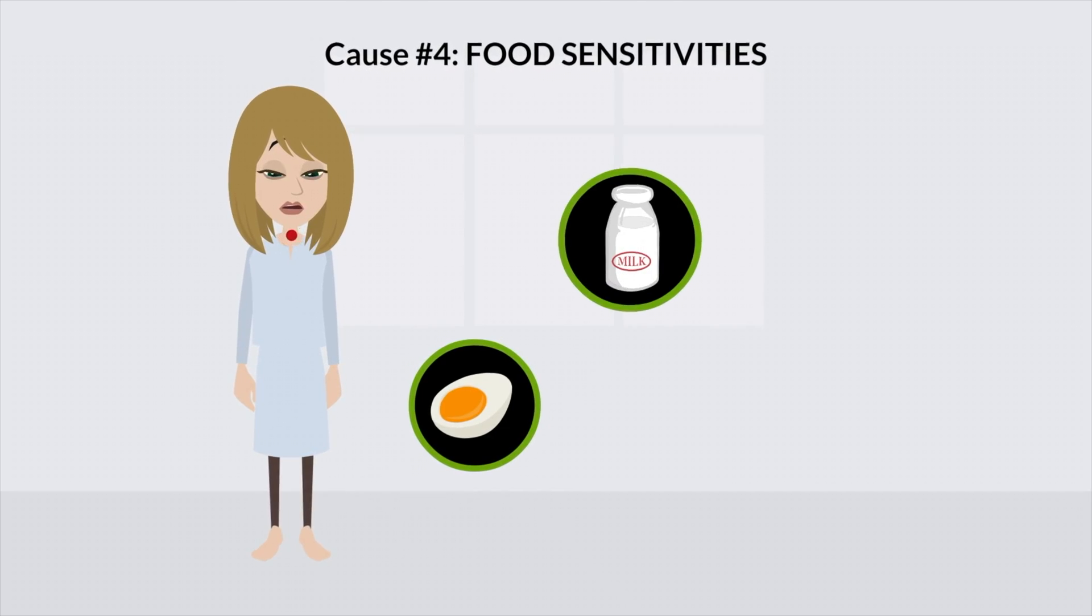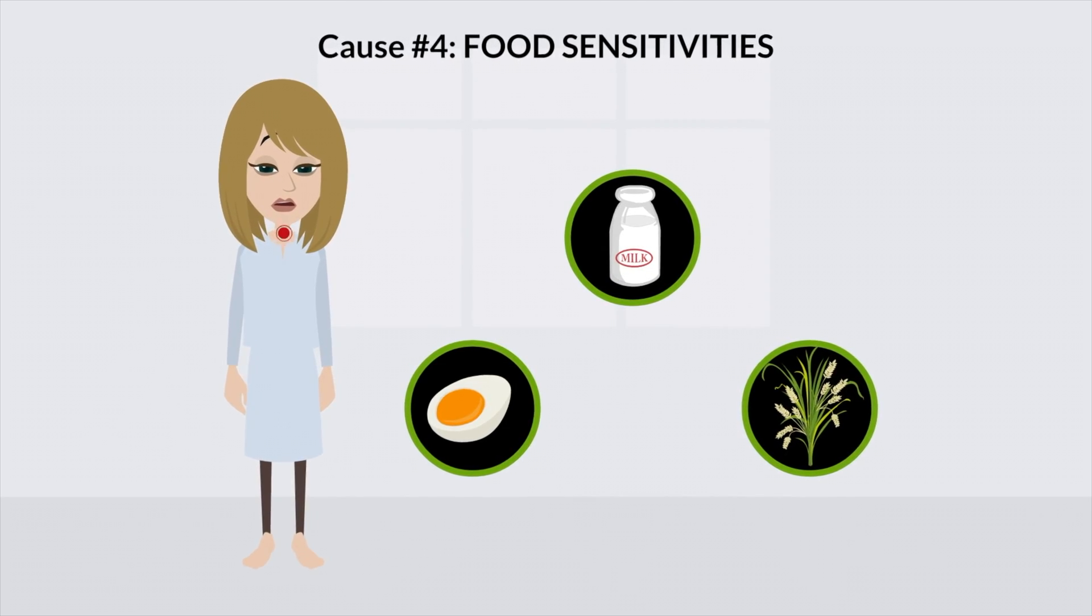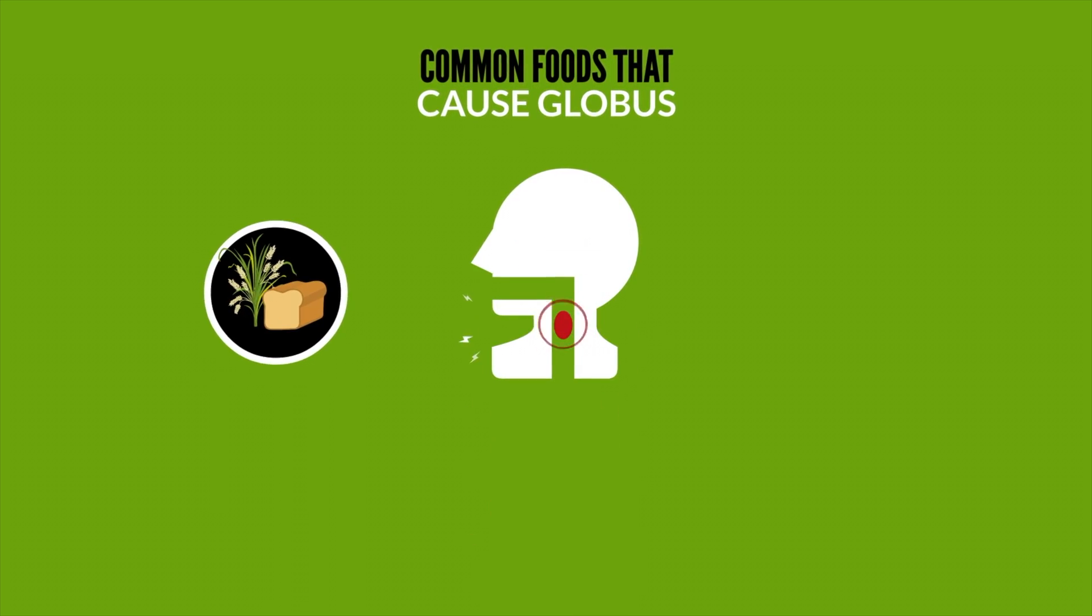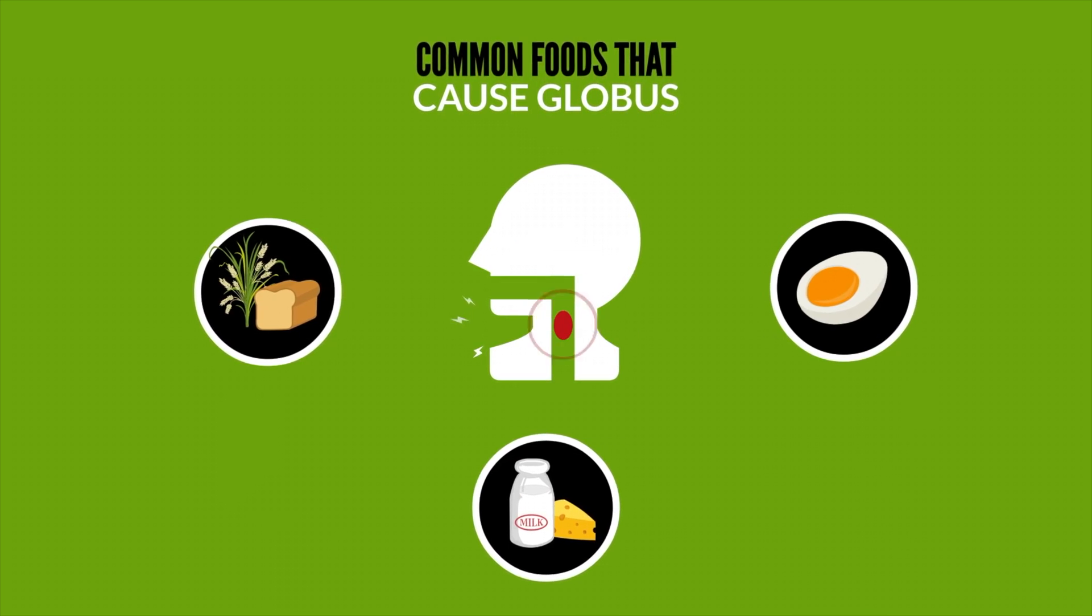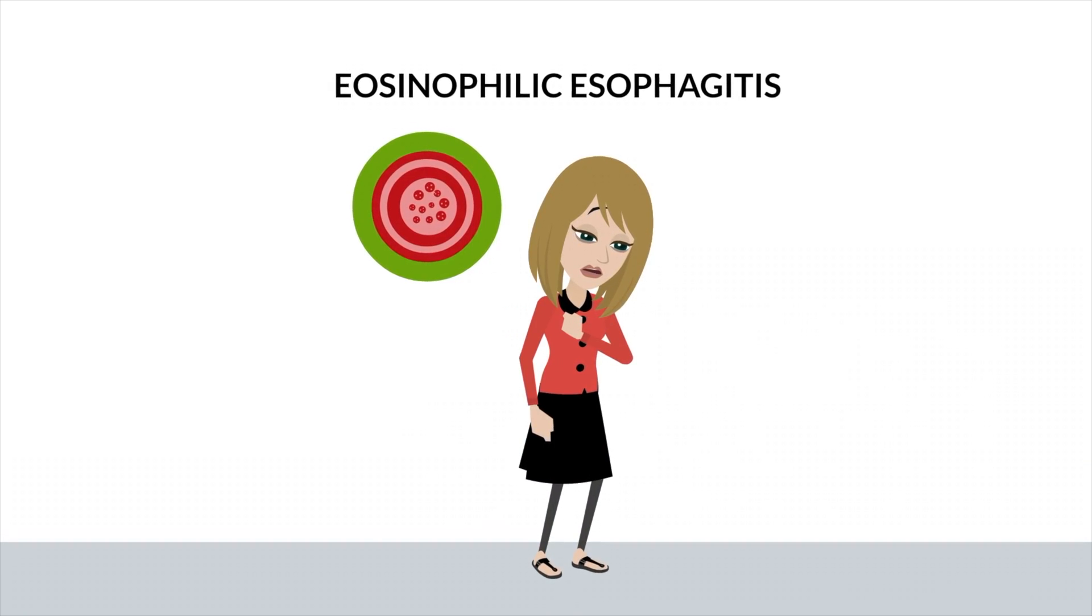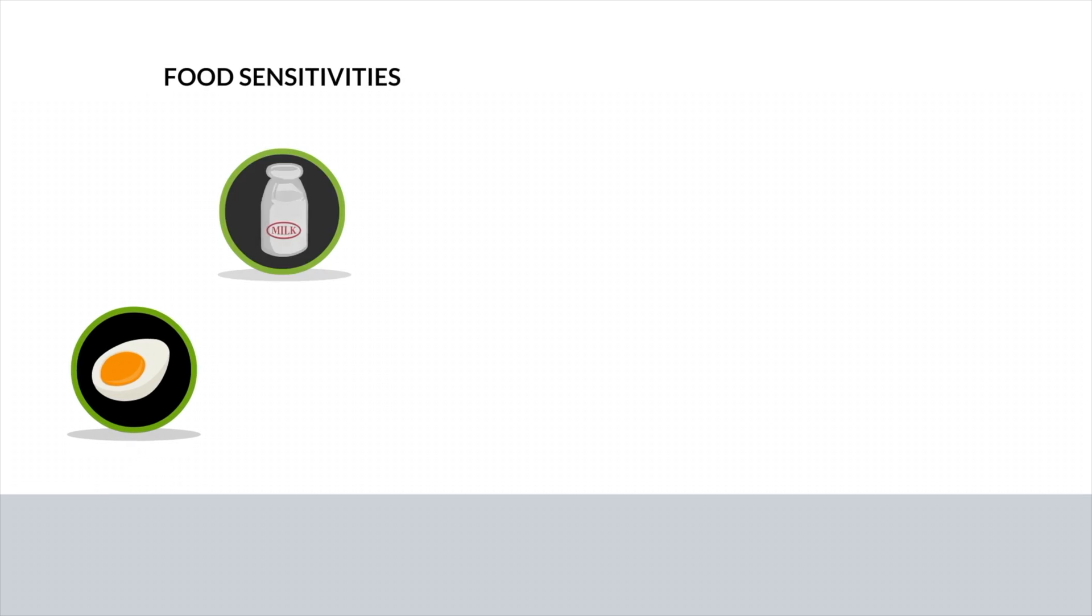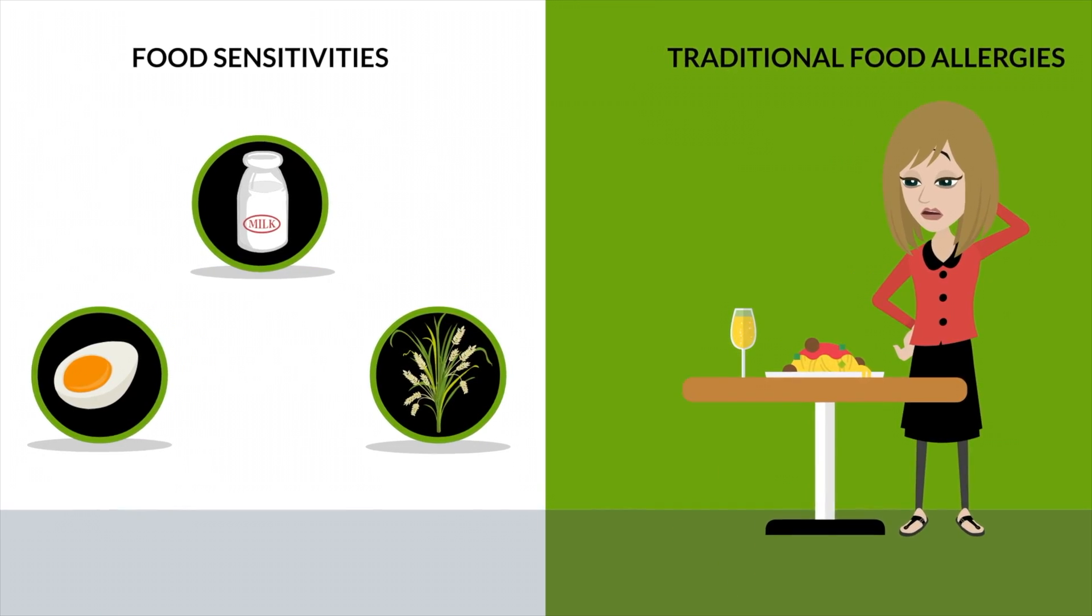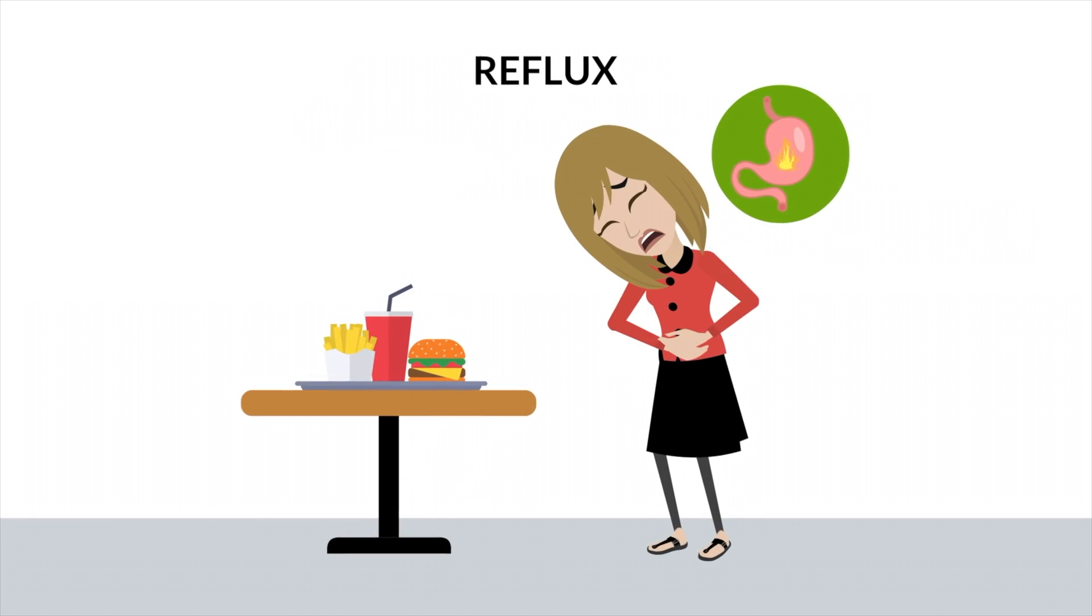Some patients with Globus ultimately find that certain foods trigger this symptom. Some common foods that have been found to cause Globus are wheat, dairy, and egg. Uncommonly, it may even cause a condition called eosinophilic esophagitis. Keep in mind that food sensitivities should not be confused with traditional food allergies nor should it be confused with foods that may cause reflux.